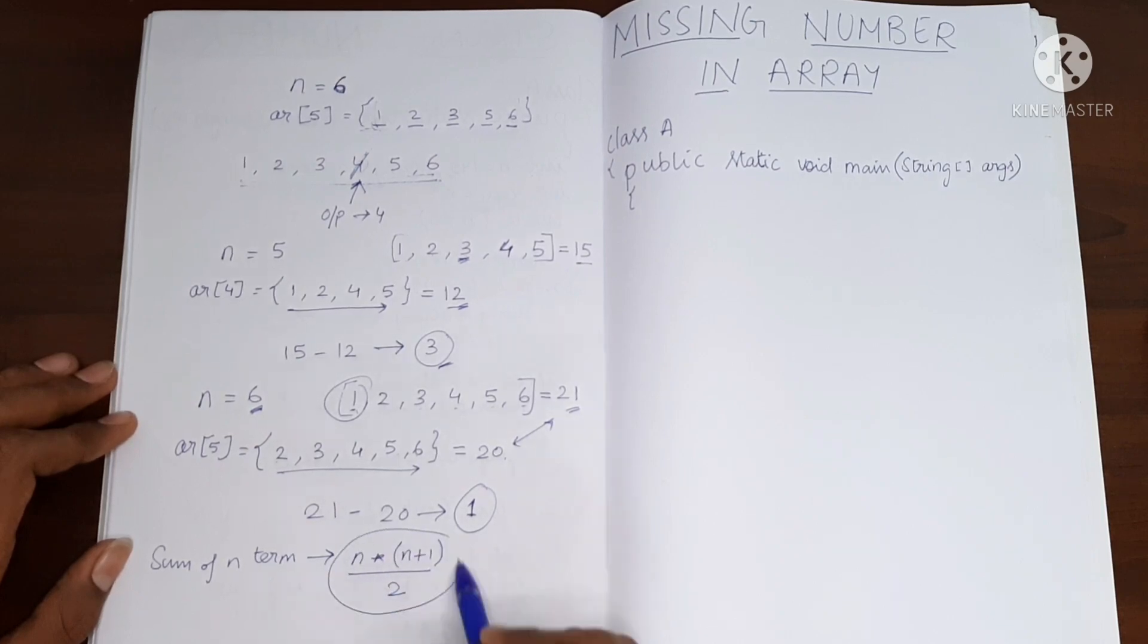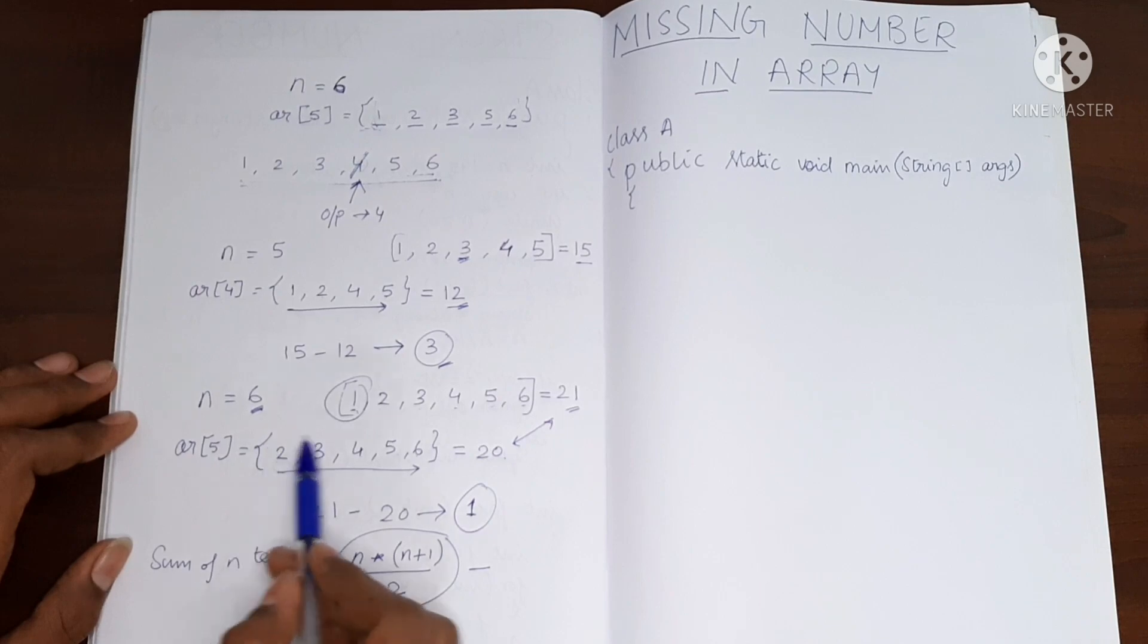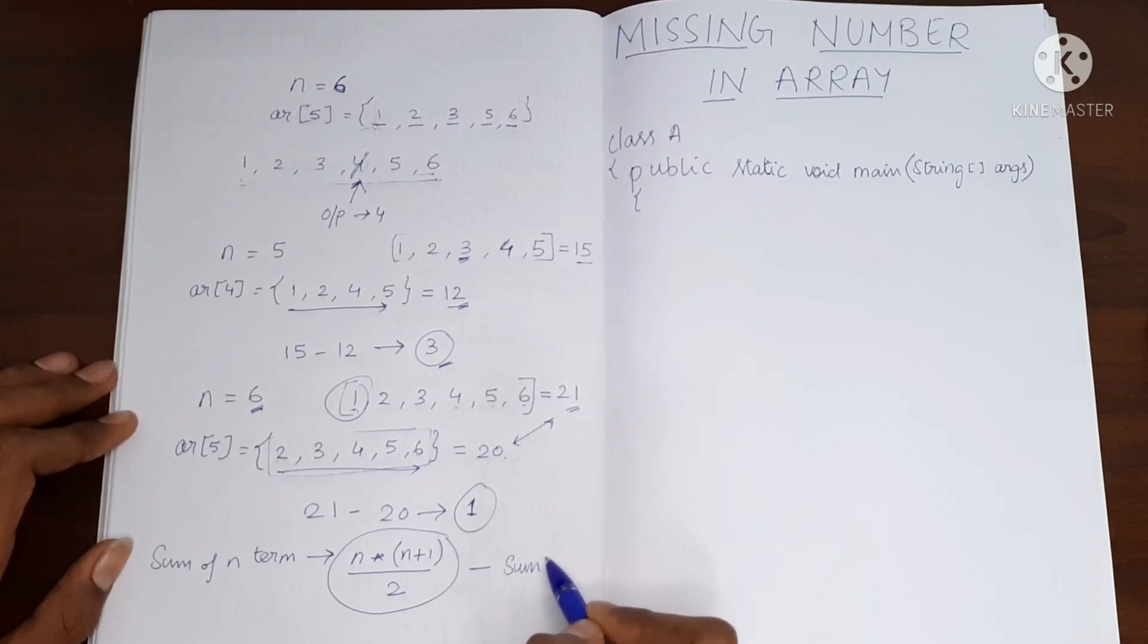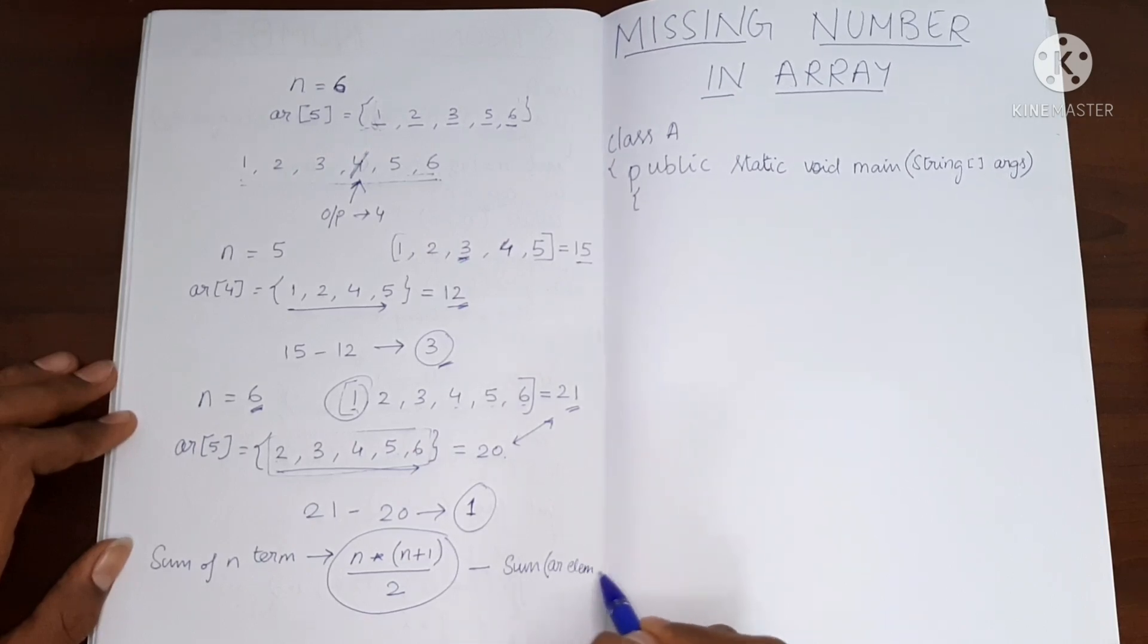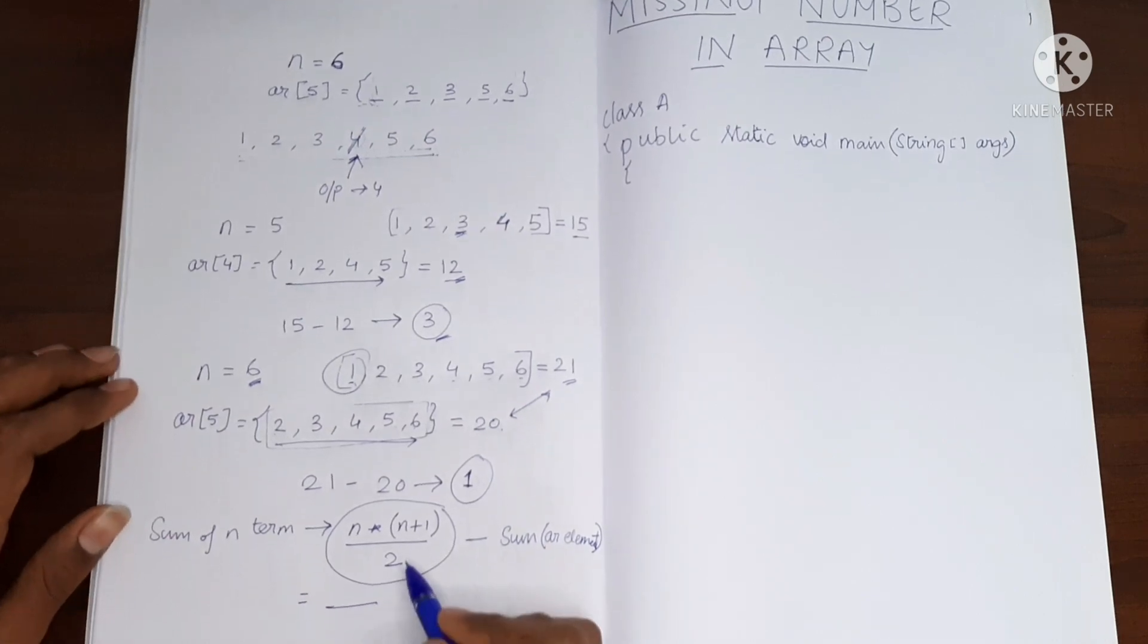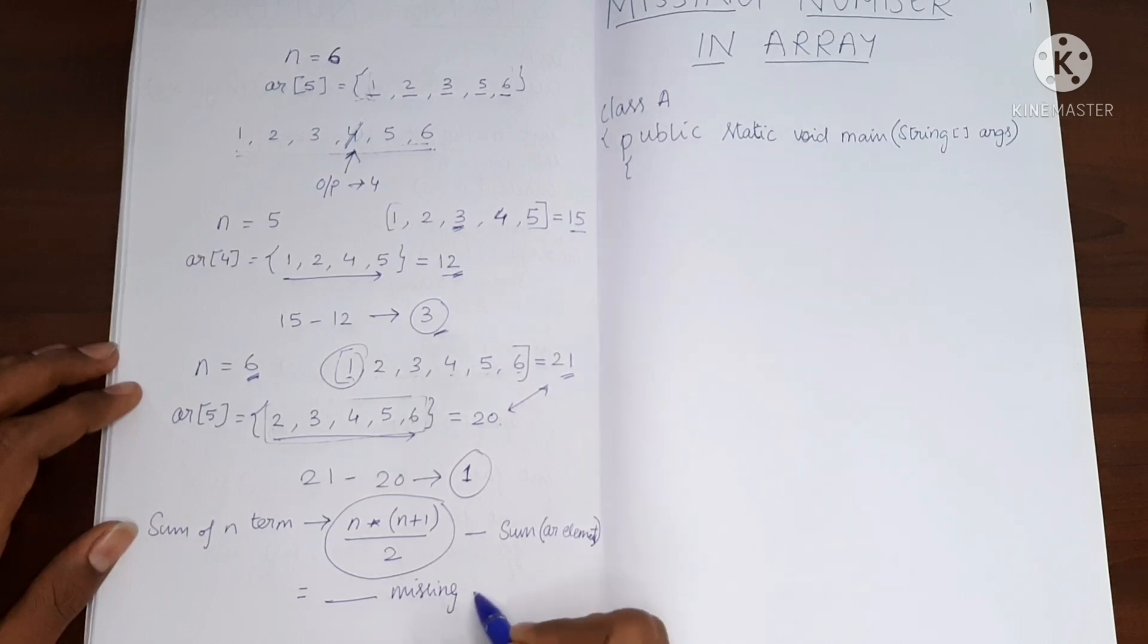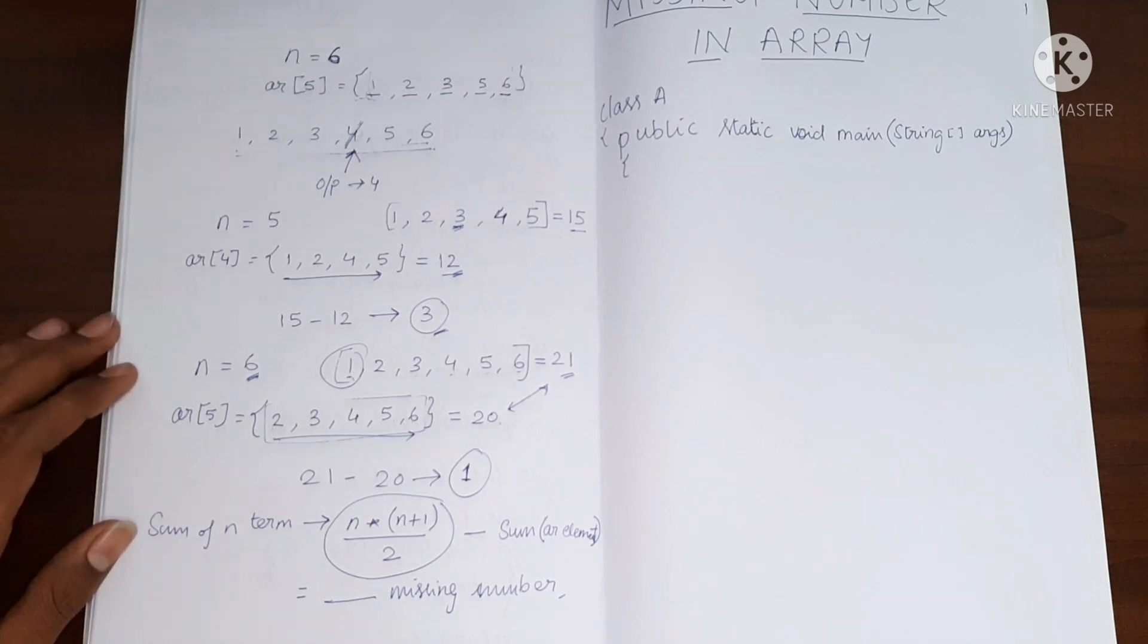So we are going to find the sum till n numbers. And this number we will subtract from the result we get after adding all the contents of the array. So we will call it something like this: sum of the array elements. So the result which we will get is the missing value, the missing number. So now let's write the program.